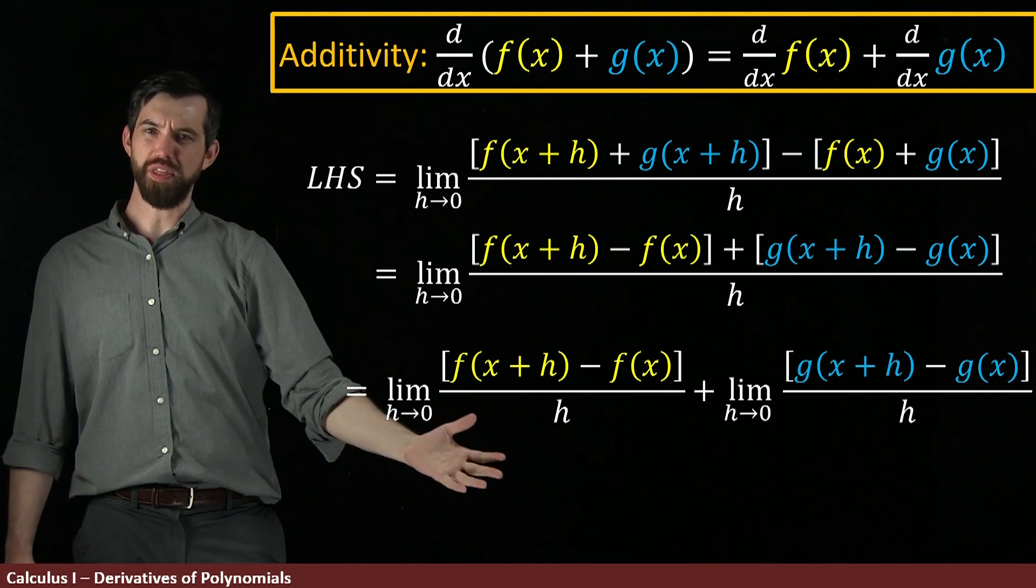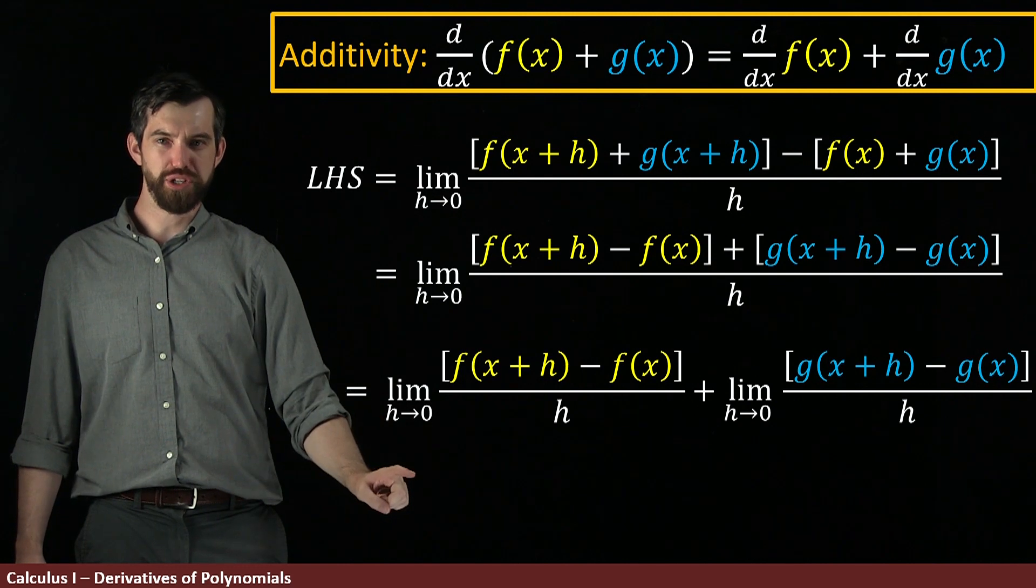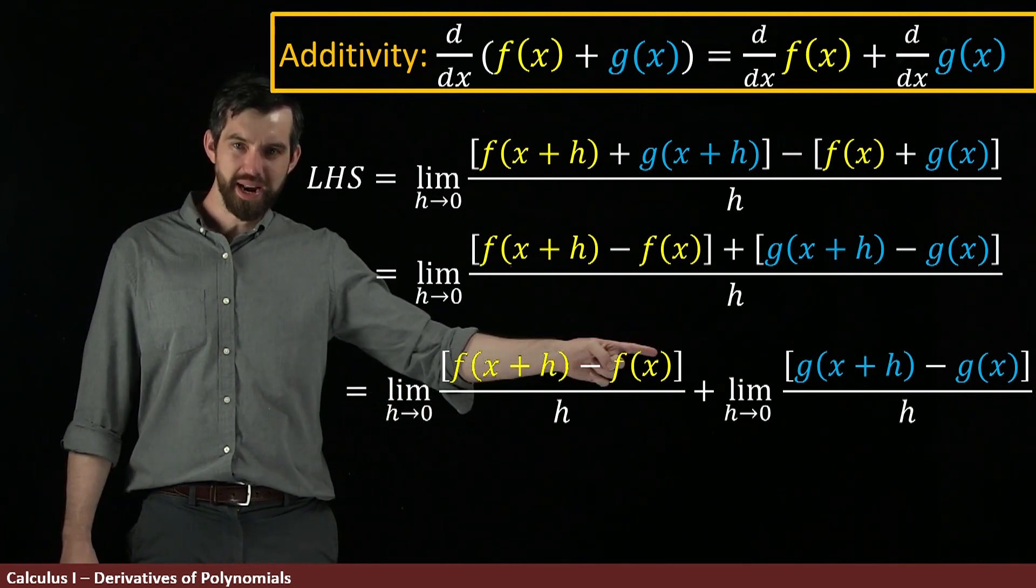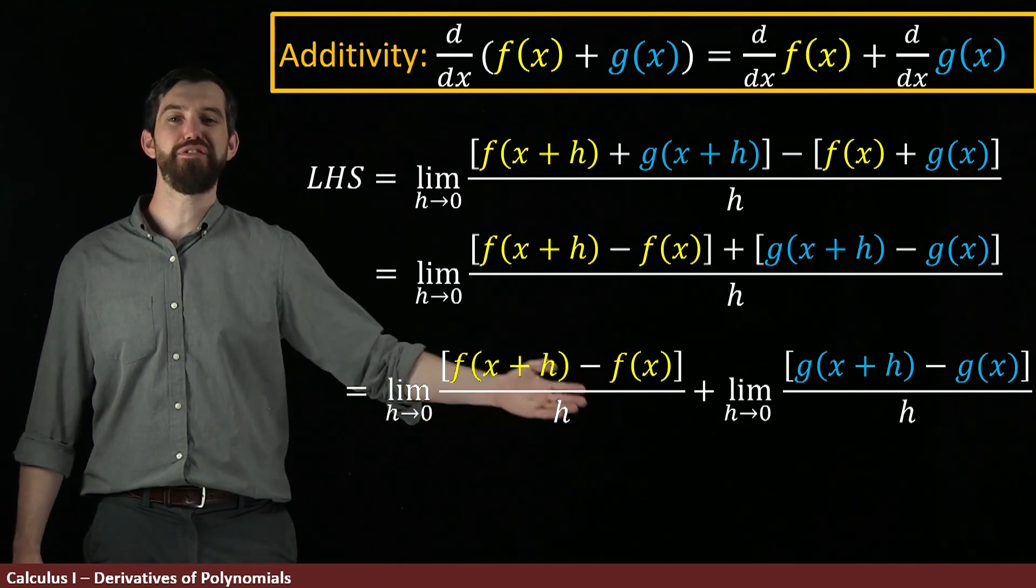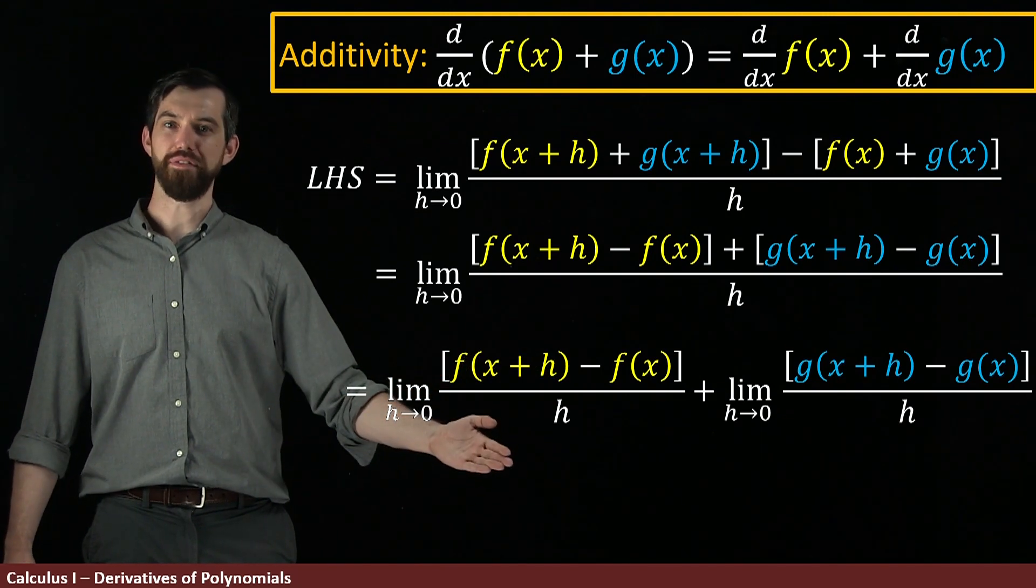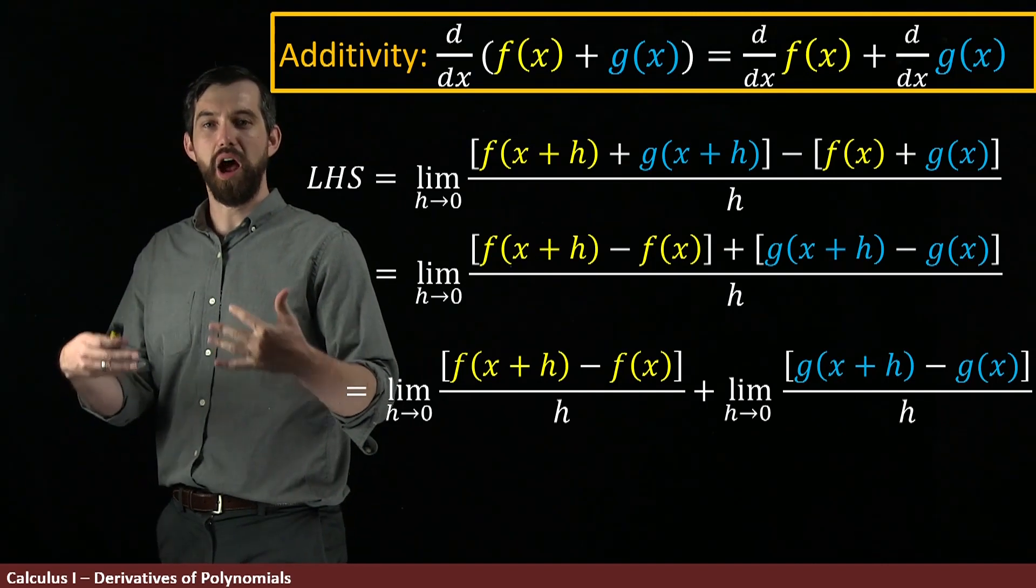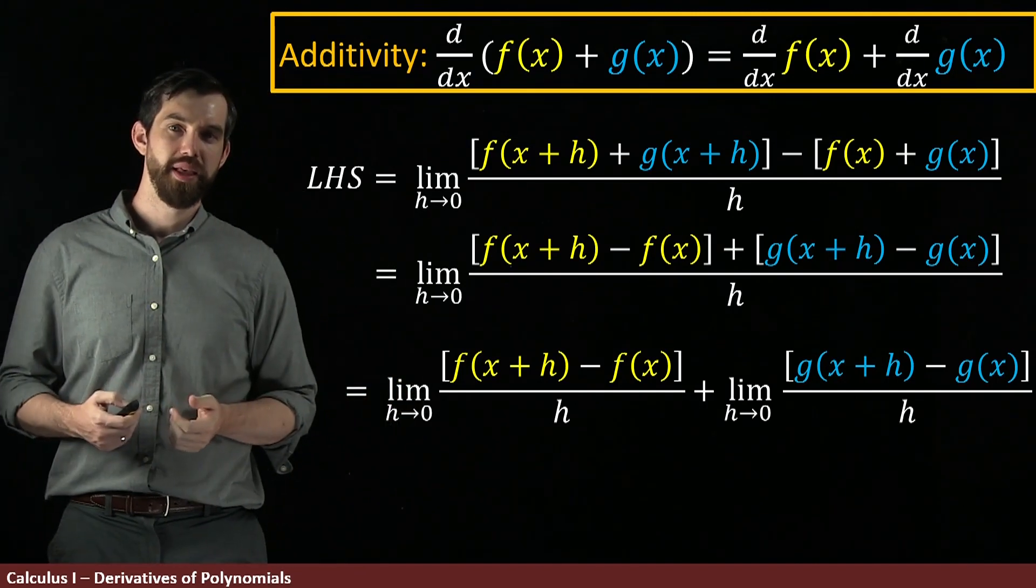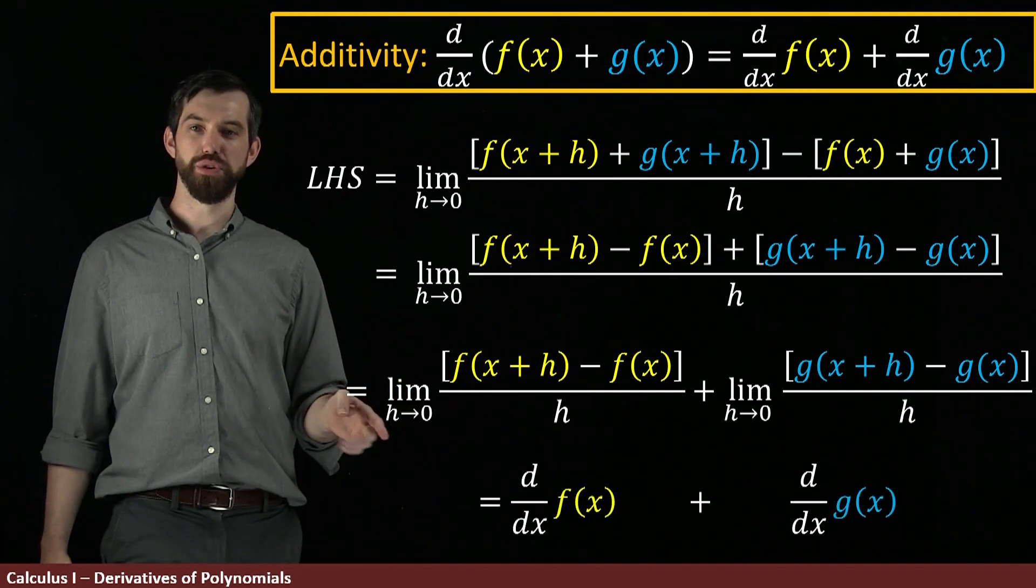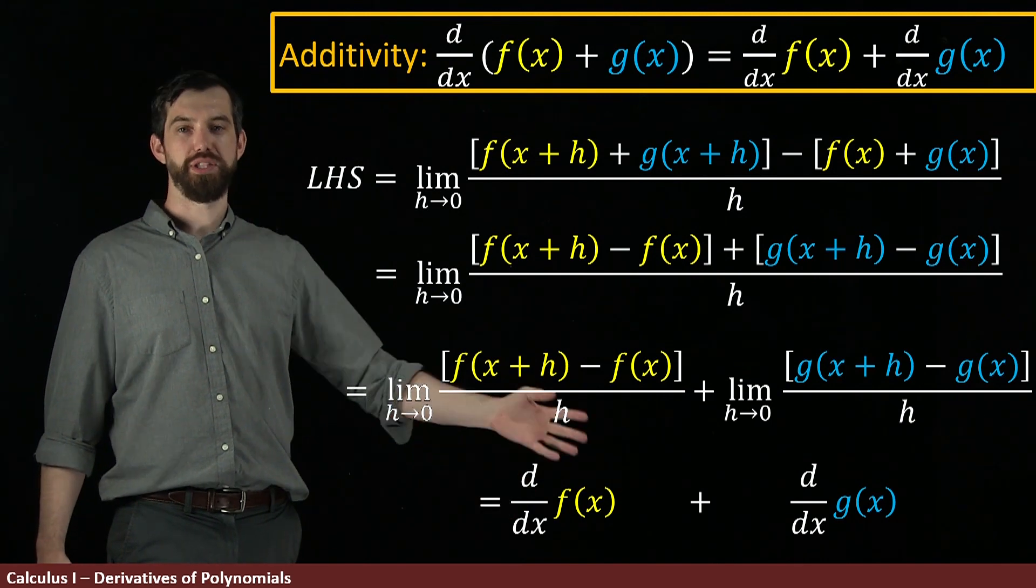But then, I know what the thing on the left is. Limit as h goes to zero, f of x plus h minus f of x all over h. This is the definition of the derivative of f. And in the same process over here, that's the definition of the derivative of g. And so, then I'm going to say that this is equal to the derivative of f plus the derivative of g.